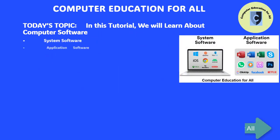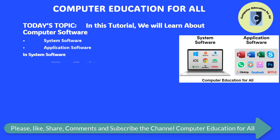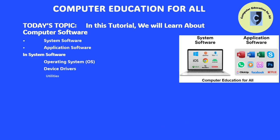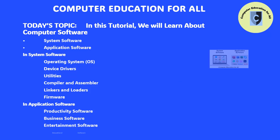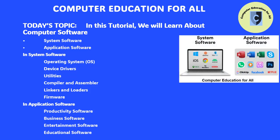We will cover system software and application software, including common types of system software such as operating system (OS), device drivers, utilities, compiler and assembler, linkers and loaders, and firmware. Some examples of application software are productivity software, business software, entertainment software, and educational software.